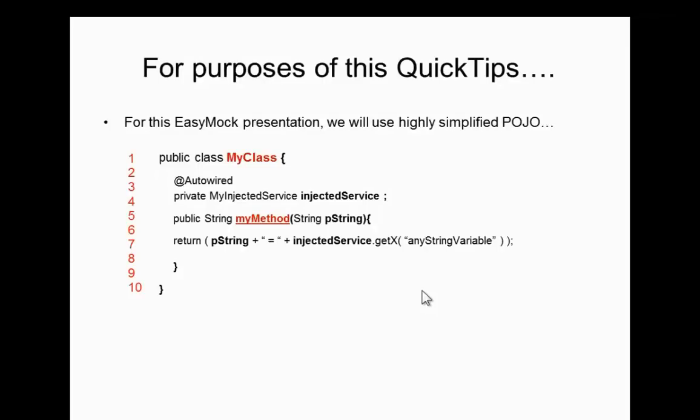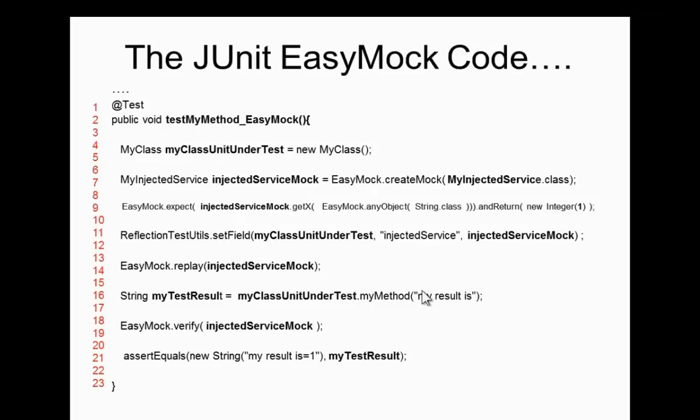For this example we're using a very simple POJO — basically 'MyClass.' It has an autowired private field and a method called 'myMethod.' The goal is to test 'myMethod.' It's purposely made to depend on that private field so that a typical normal JUnit test would not work, meaning you have to use some sort of mocking to get it to work. Here's what the JUnit EasyMock code would look like.